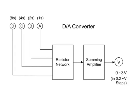This block diagram shows a digital to analog converter with four digital inputs that pass through a resistor network. A summing amplifier alters the voltage output that can vary from 0 to 3 volts at increments of 0.2 volts.